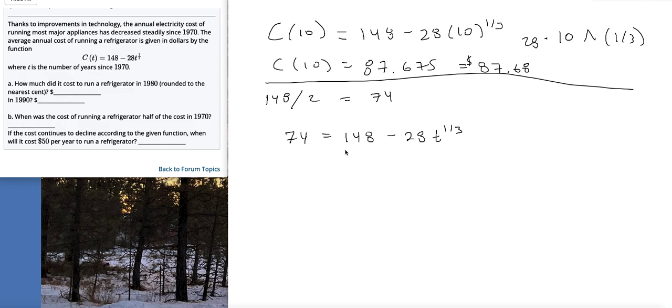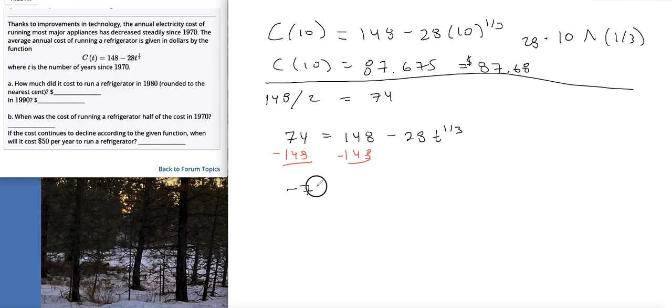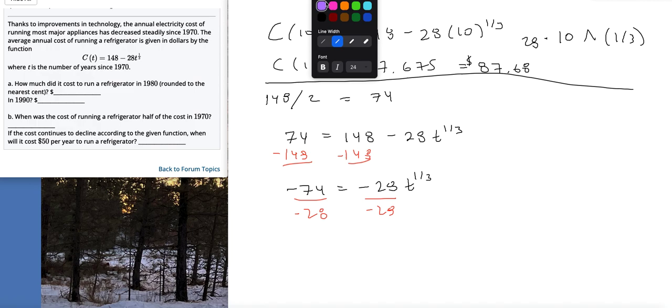The first thing I'll do is bring over the 148, and that's going to be negative 74 equals negative 28t to the one-third. Then let's divide out that 28 and get this all by itself. So then t to the one-third equals...